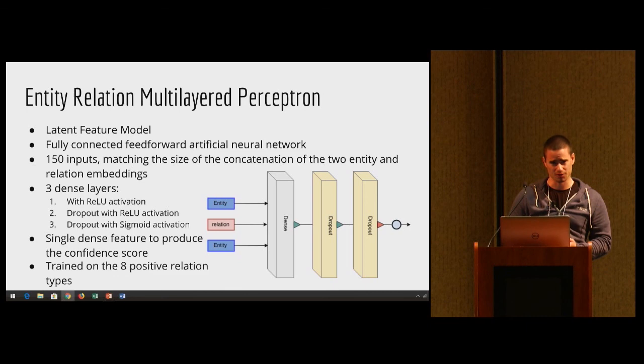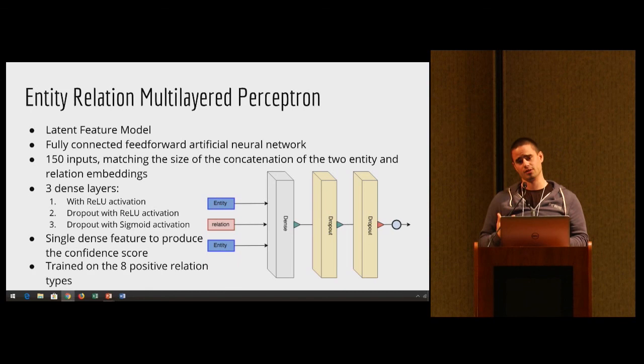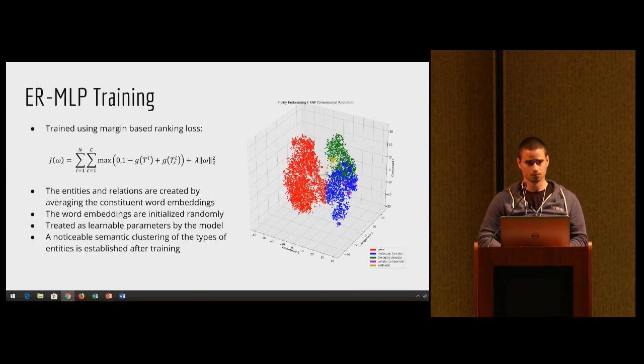The entity relation multilayer perceptron is a latent feature model. What I mean by latent is the features generated from this model are not readily observed over the graph. They are automatically generated through this neural network in kind of a black box approach. The inputs to this model are the two entities and the single relation to represent that edge, but they're numerically represented as embeddings. Then it's followed by three dense layers, then finally a single feature to produce one confidence score of whether or not that edge should exist. We trained this on the eight positive edge types because the negative edge types showed significant overfitting.